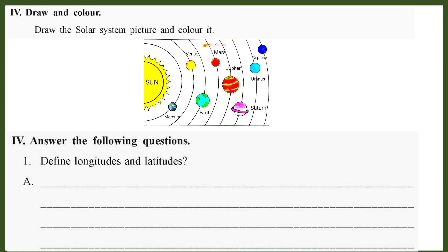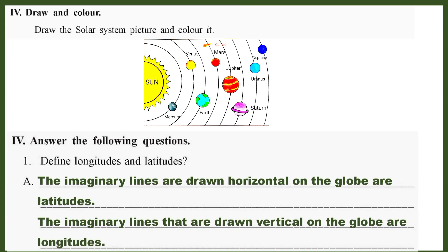Answer the following questions. Question 1: Define longitudes and latitudes. The imaginary lines drawn horizontally on the globe are latitudes. The imaginary lines drawn vertically on the globe are longitudes.